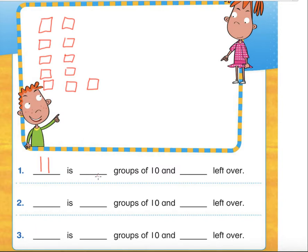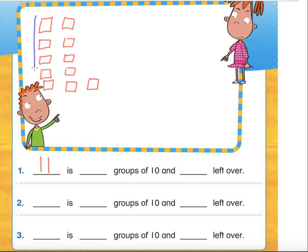Eleven is blank groups of ten and blank left over. So now we're going to use this number of blocks we just counted and make a group of ten. I'm going to use a different color so it really stands out. We're going to count the first ten and circle them: one, two, three, four, five, six, seven, eight, nine, and ten.